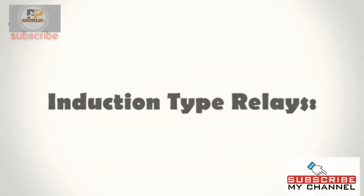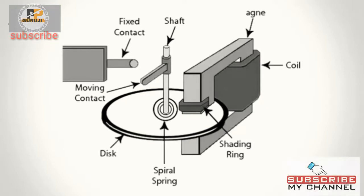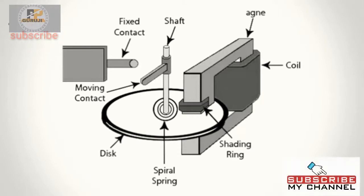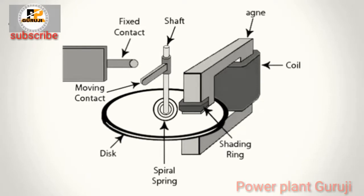Induction type relays. These are used as protective relays in AC systems alone and are not usable with DC systems. The actuating force for contact movement is developed by a moving conductor that may be a disc or a cup, through the interaction of electromagnetic fluxes due to fault currents. These are of several types like shaded pole, watt-hour and induction cup structures, and are mostly used as directional relays for power system protection and also for high speed switching operation applications.